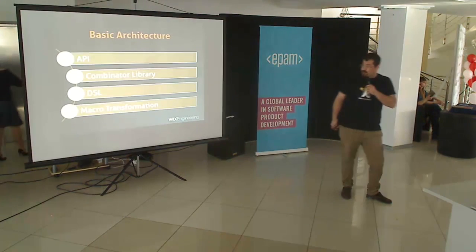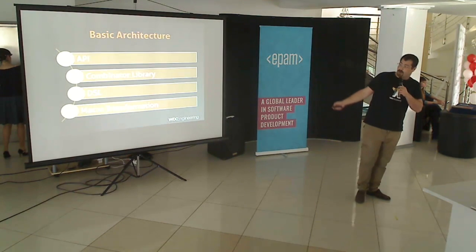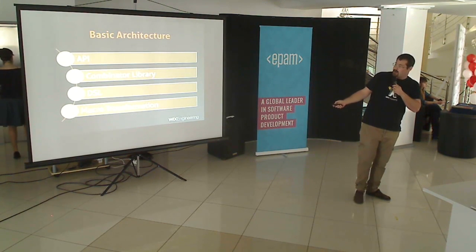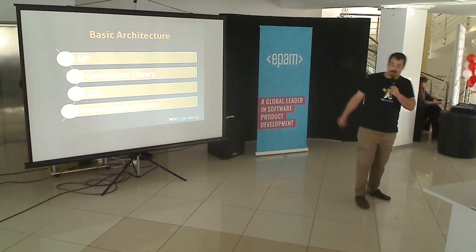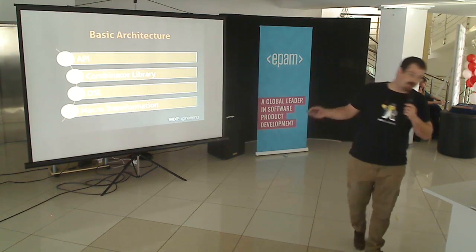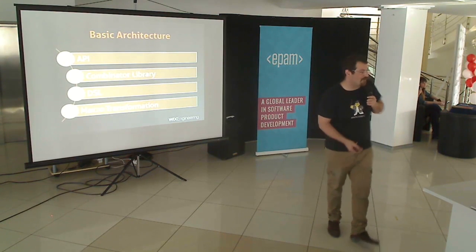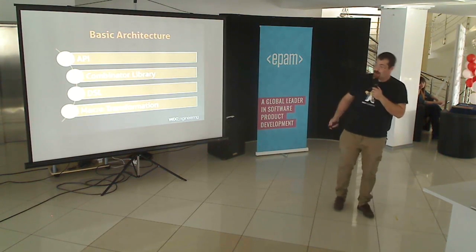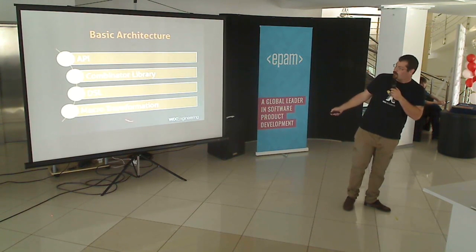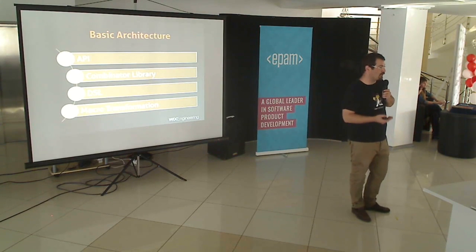In terms of architecture, a core comprises four parts. You have your API, which I've shown you at the beginning. You have a combinator library — we had to come up with our own word, we called it combinators. You have a DSL for defining validation rules, and then you get a macro that actually transforms your validation rules into type classes.